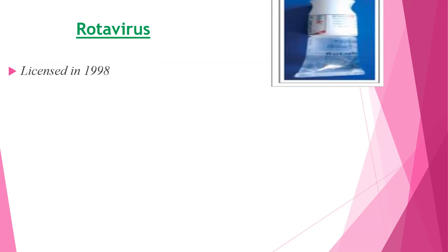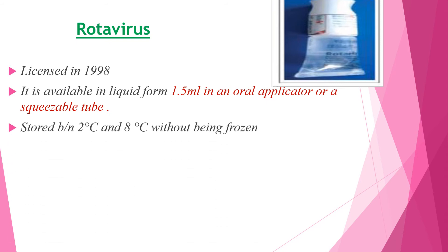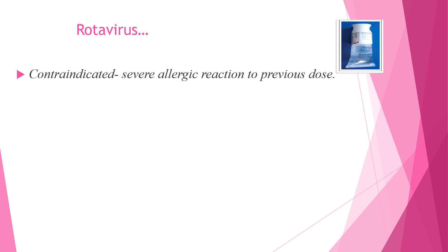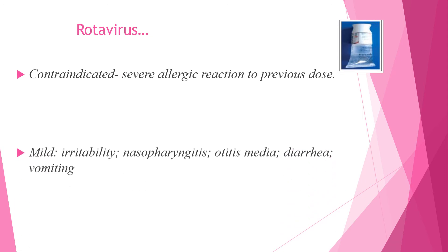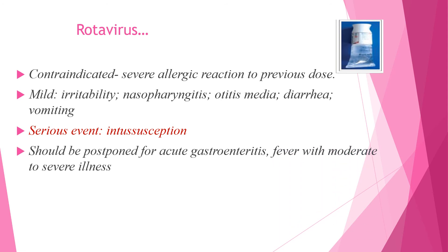Rotavirus vaccine was licensed in 1998 and is available in liquid form as 1.5 ml in an oral applicator or squeezable tube. It is stored between two to eight degrees Celsius without being frozen. The program is at six and ten weeks of age, only two doses. Rotavirus vaccine is not for infants with a history of intussusception. The contraindication is allergic reaction to a previous dose. Mild reactions include irritability, nasopharyngitis, otitis media, diarrhea, and vomiting. A rare serious event is intussusception. This should be postponed if there is acute gastroenteritis or fever with moderate to severe illness.